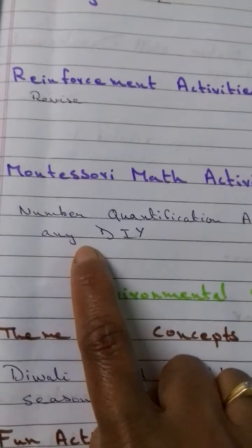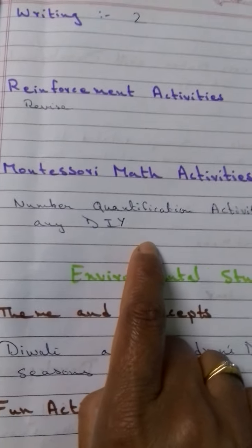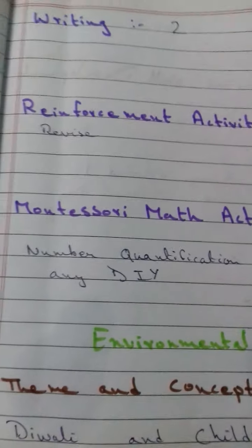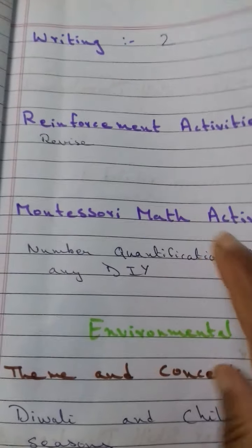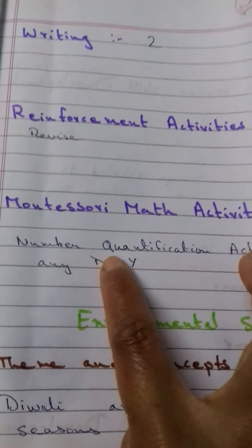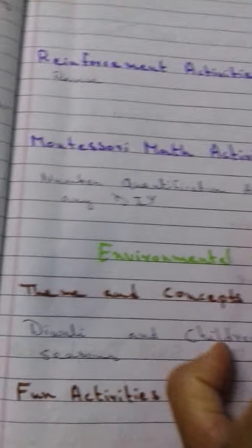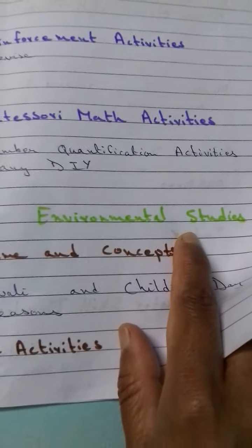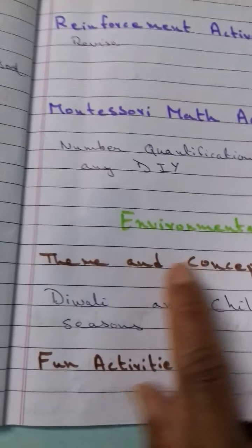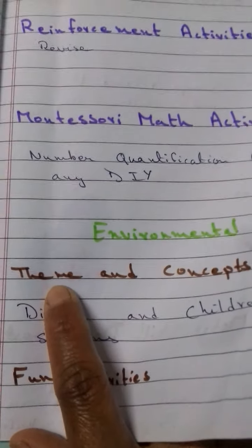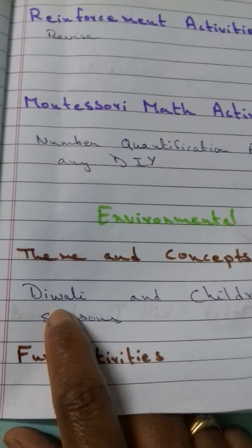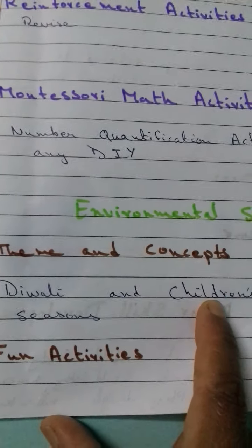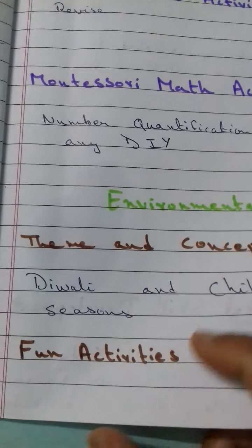For Montessori math activities, you can give many DIY activities which help the child to quantify the numbers, i.e. number counting activities. Then in EVS or Environmental Science, the theme and concept is Diwali, Children's Day, and season.